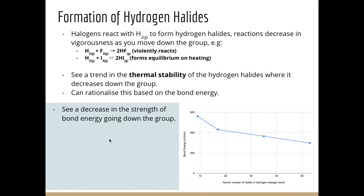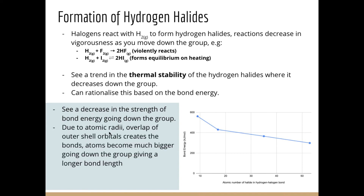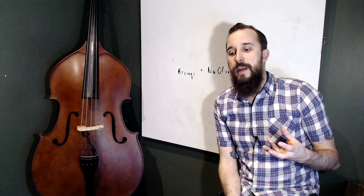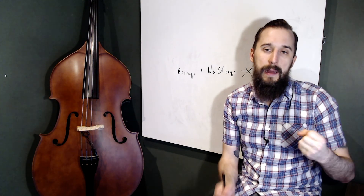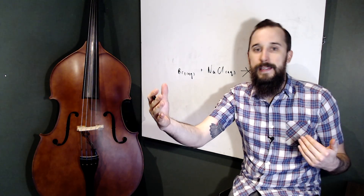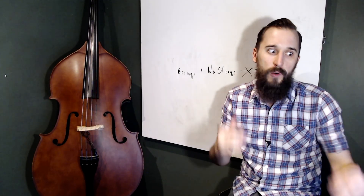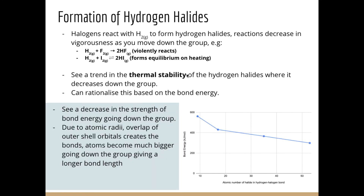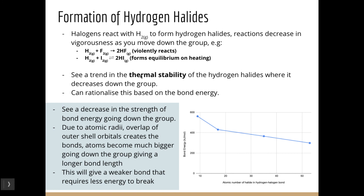The decrease in bond energy going down the group is due to atomic radius overlap: larger atoms have longer bond lengths, meaning the covalent bond electrons are further from the positive nucleus. The greater the distance, the weaker the electrostatic attraction, and therefore the weaker the bond. Since thermal stability just means stability under heating, a weaker bond requires less energy to break, making the hydrogen halides less thermally stable going down the group.